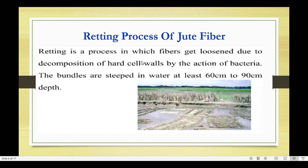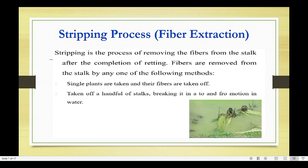Next is the retting process. Retting is the process in which fibers get loosened due to decomposition of hard cell walls by the action of bacteria. The bundles are steeped in water at least 60 to 90 centimeters deep. The next process is stripping, which is the fiber extraction process — removing fibers from the stalk after the completion of retting.